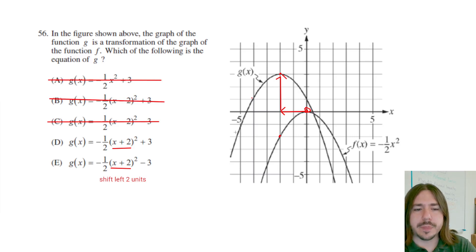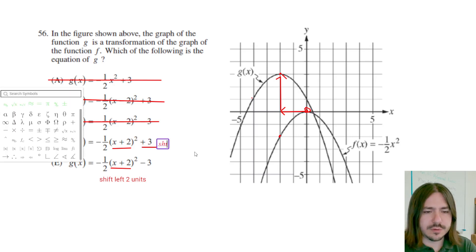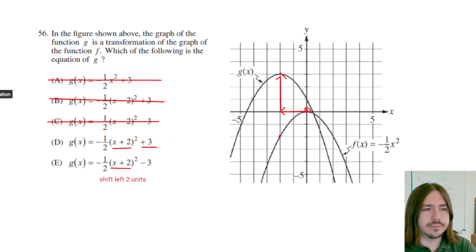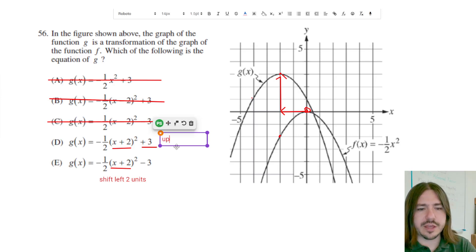The last thing is this shift up, and the shift up is going to be a situation where you're adding a number to the whole function. So we want to have this plus 3 right here. Plus 3 means we're shifting up. This plus 3 on the end indicates that we're shifting the graph up 3 units.